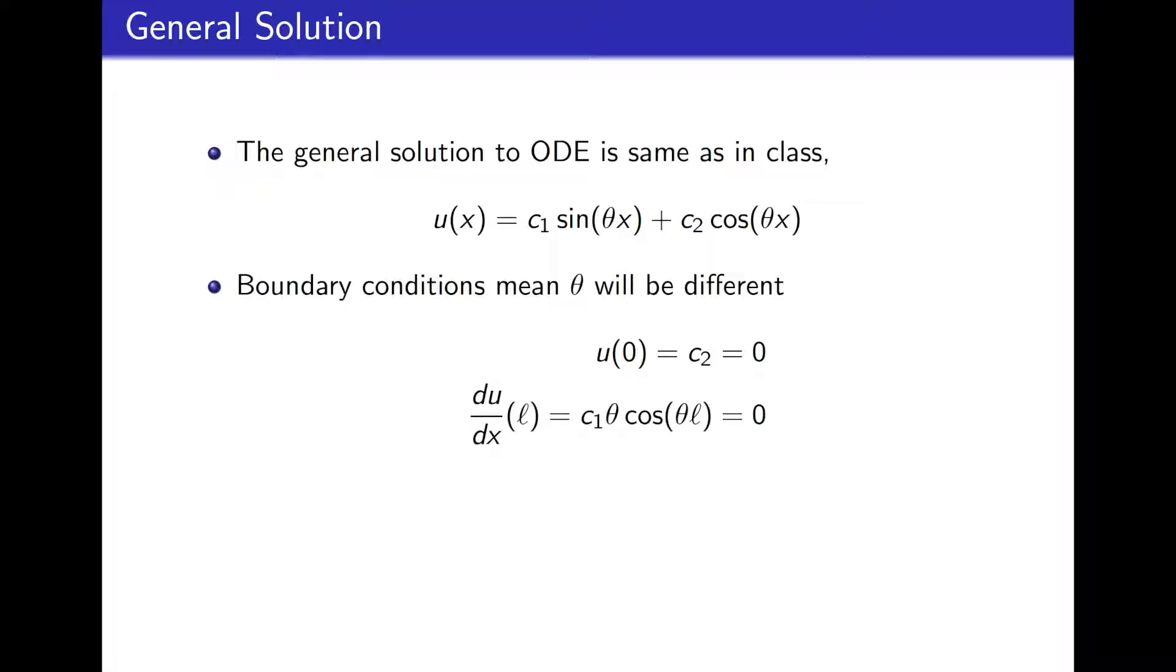Next, to use the other boundary condition, we have to take the derivative of our general solution, u, given here. We take that derivative, evaluate it at L, and we see that we get c1 theta times cosine of theta L must be equal to 0.